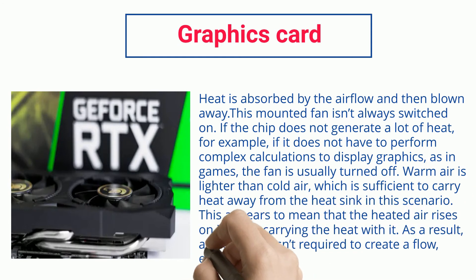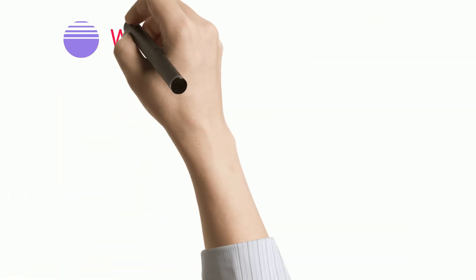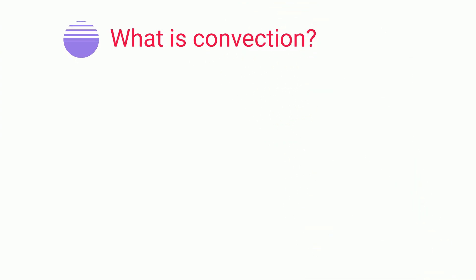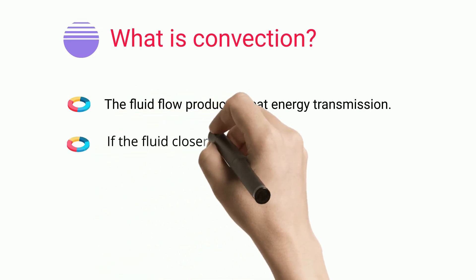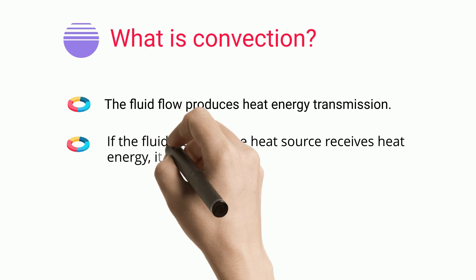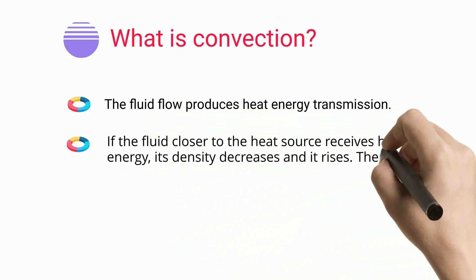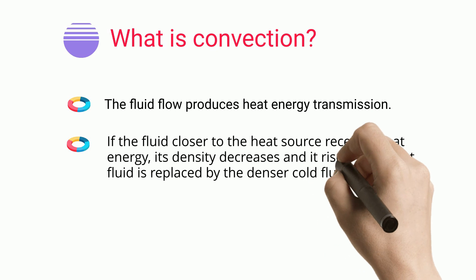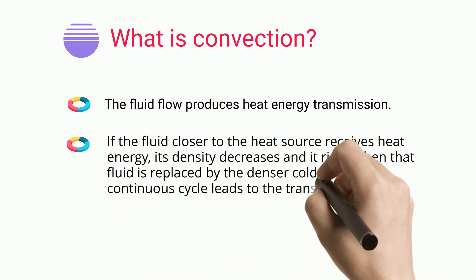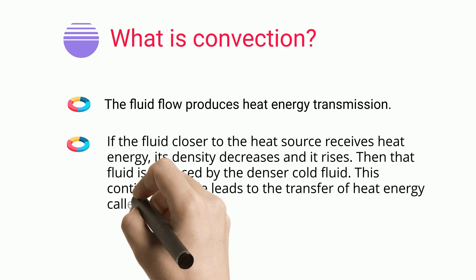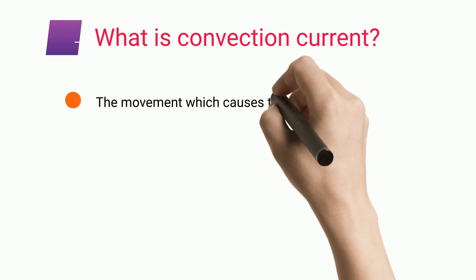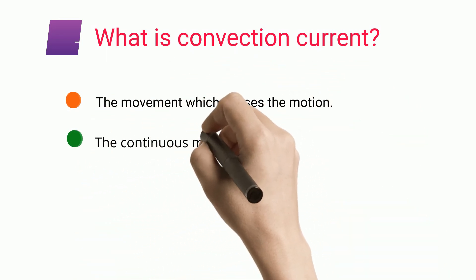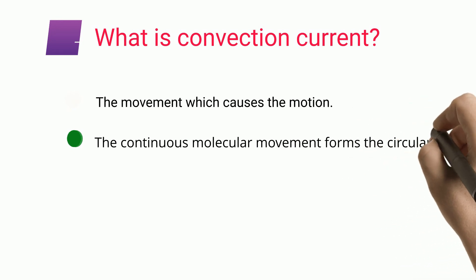Critical FAQs: What is convection? The fluid flow produces heat energy transmission. If the fluid closer to the heat source receives heat energy, its density decreases and it rises. Then that fluid is replaced by the denser cold fluid. This continuous cycle leads to the transfer of heat energy called convection. What is convection current? The continuous molecular movement forms circular motion within the fluid known as a convection current.